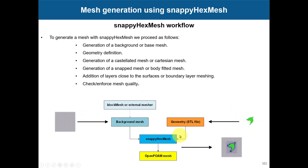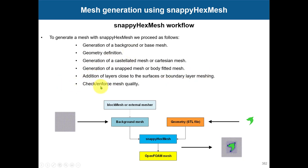You then put everything together and control the meshing process using the snappyHexMesh dictionary. In that dictionary you control the castellation or refinement of the mesh - surface refinement and volume refinement. You also control the snapping or body-fitted mesh, and the addition of layers - inflation layers, boundary layers, or prismatic layers - to resolve the boundary layer.